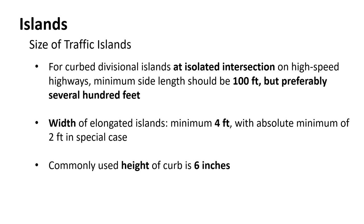For curbed divisional islands at isolated intersections on a high-speed road, the minimum side length is 100 feet, and preferably even more. At 55 mph — where stopping sight distance is 495 feet — you need a much bigger island to be conspicuous because people come up on it so fast. Width is important because that's what catches your eye; we try to use a minimum of four feet wide for divisional islands. Sometimes you can get by at two feet, but that's usually not wide enough to be noticed. The four-foot width catches people's eye, and we typically use a six-inch barrier curb on these divisional islands.